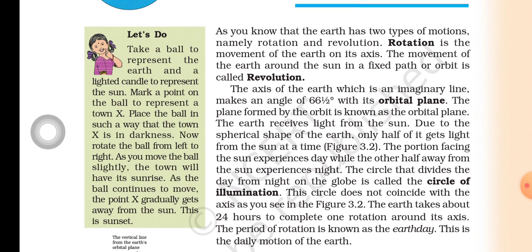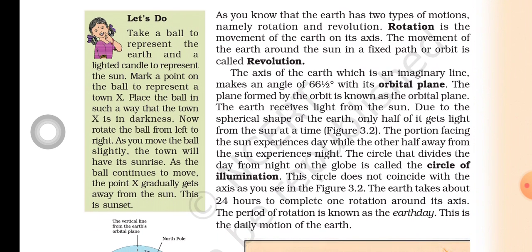There is an activity that you have to do at home. Take a ball to represent the earth and a lighted candle to represent the sun. With the help of elders you can do this activity. Mark a point on the ball to represent a town X. Place the ball in such a way that town X is in darkness.